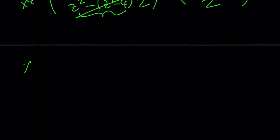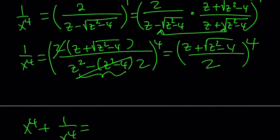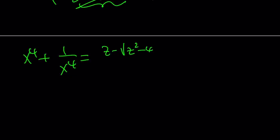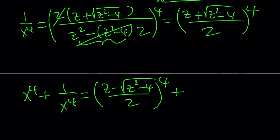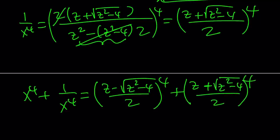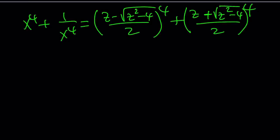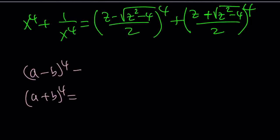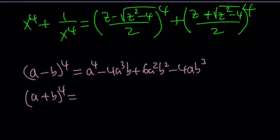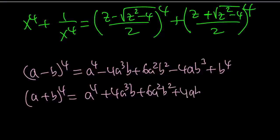Let's write down what we have: x to the fourth power and 1 over x to the fourth power. Let's add them up. x to the fourth is z minus square root of z squared minus 4 over 2, to the fourth power. And 1 over x to the fourth is just the conjugate — notice it is not just the reciprocal but also the conjugate. We're going to use the binomial theorem to expand both. From the binomial theorem: a to the fourth minus 4a cubed b plus 6a squared b squared minus 4ab cubed plus b to the fourth. And the second one is all positive — same thing but all positive.